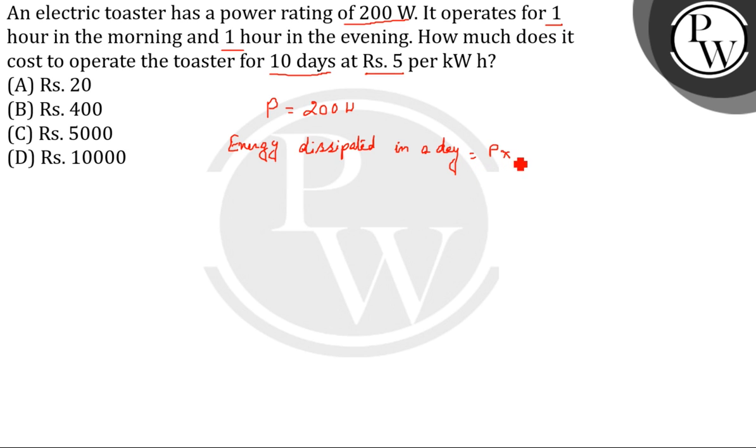It will be power into time. So, P into T which is equals to 200 into 2 which gives us 400 watt hour.